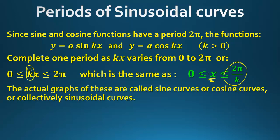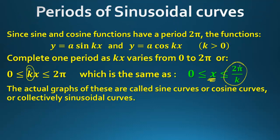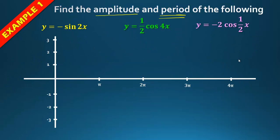The collective term for sine and cosine curves is sinusoidal curves. Let's go into what the period means — starting with y = –sin(2x). That negative is going to flip the sine curve over.